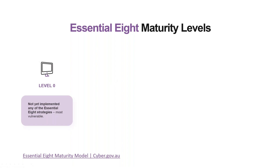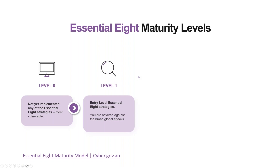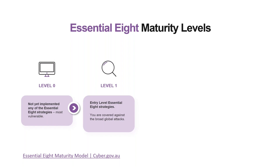Level zero: if you haven't yet implemented anything that aligns with the Essential Eight, you'll pull up at level zero for each of those controls. Once you reach level one maturity — which requires a level one implementation on each of the eight controls — you classify as Essential Eight maturity level one. These are really designed to cover against broad global attacks, that broadcast scattergun approach where an attacker isn't targeting any individual or specific organization but just trying to find where they can gain an advantage.